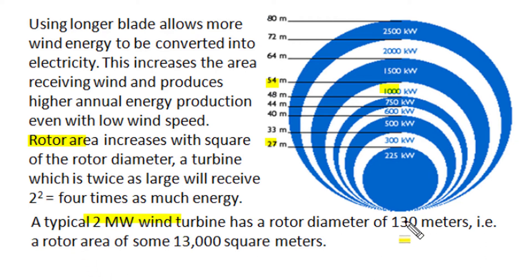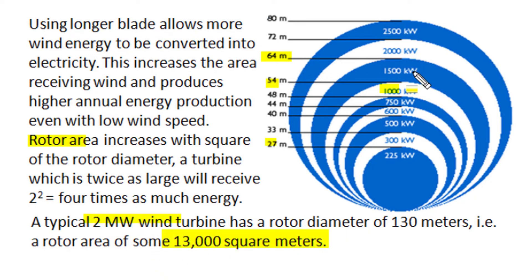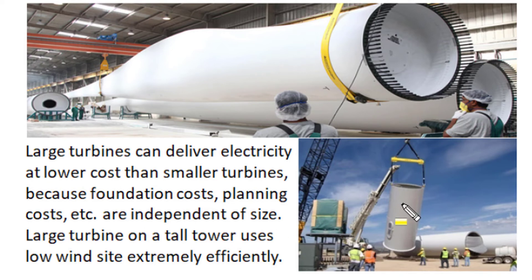Typically, a utility high-power 2-megawatt wind turbine has a rotor diameter of 130 meters with rotor blade dimension of 64 meters, making a rotor sweep area of around 13,000 square meters. That can ultimately produce 2 megawatts of electrical output at rated wind velocities of 10 to 15 meters per second. It has now been proved that large turbines can deliver electricity output at lower cost than smaller turbines.